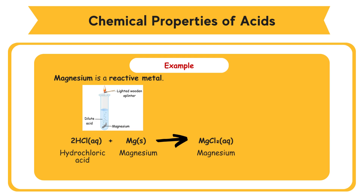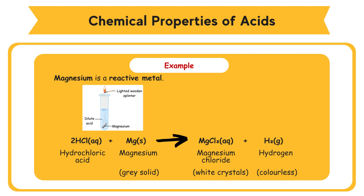To become Magnesium Chloride, MgCl2, and Hydrogen, H2. The gray solid Magnesium dissolves in HCl to form white crystals of Magnesium Chloride, and colorless hydrogen gas is liberated. The hydrogen gas liberated can be identified using a lighted wooden splinter. Hydrogen gas burns with a pop sound.